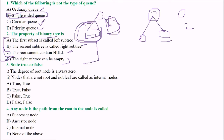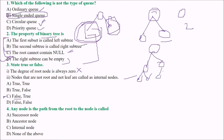State true or false. Statement one: the degree of root node is always zero — this is not true. Statement two: nodes that are not root and not leaf are called internal nodes. These are the leaf nodes, this is the root, and the remaining are called internal nodes — this is absolutely correct. So we go with answer C.